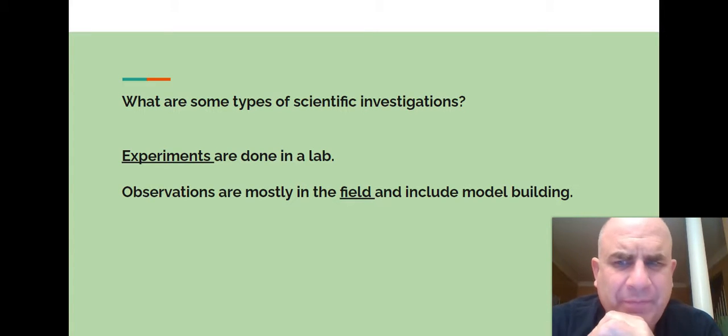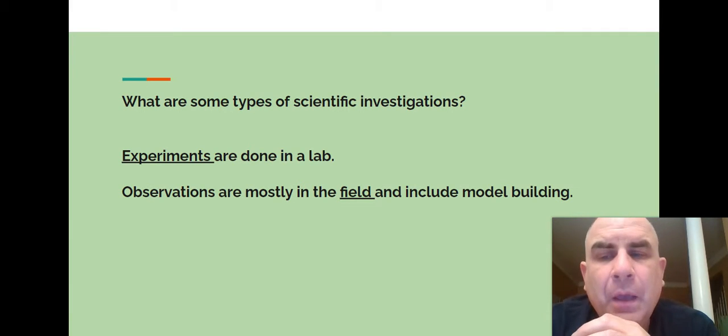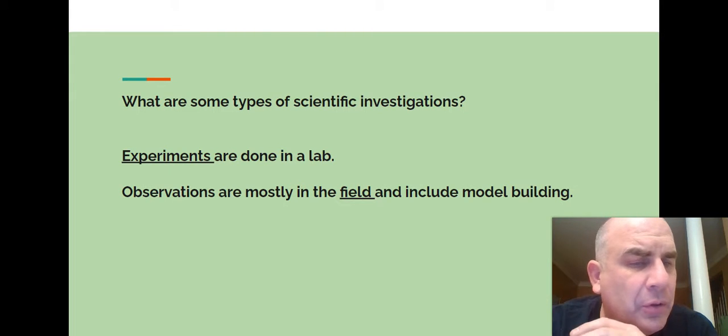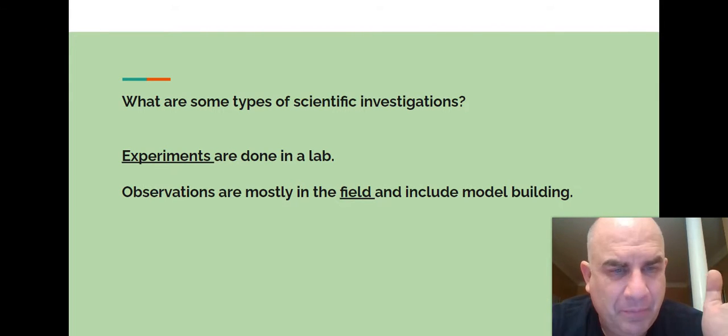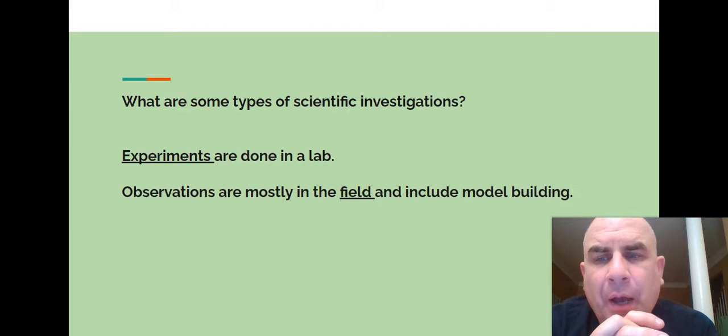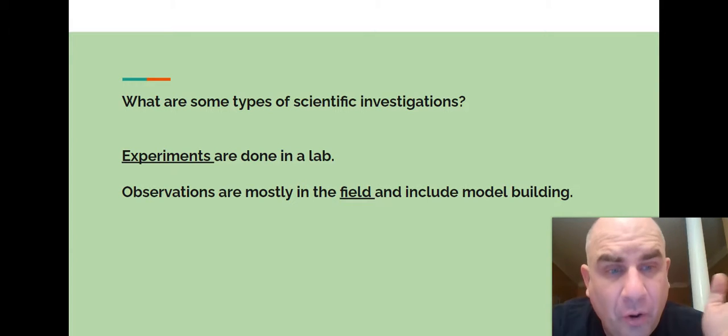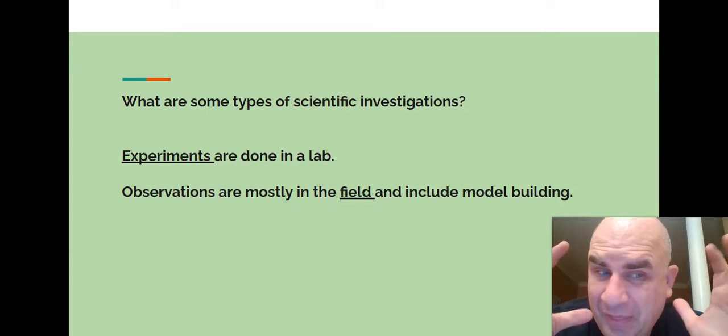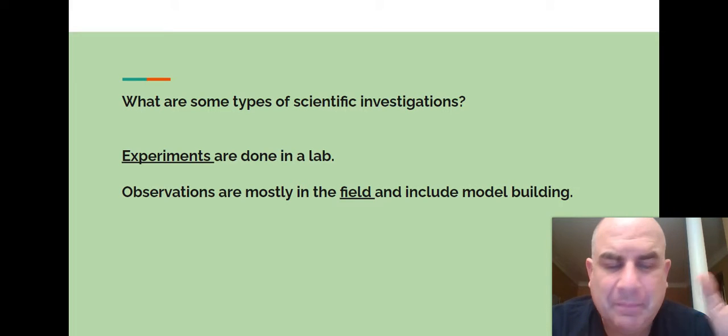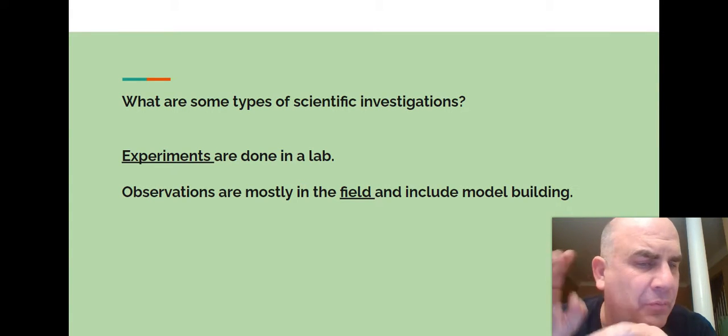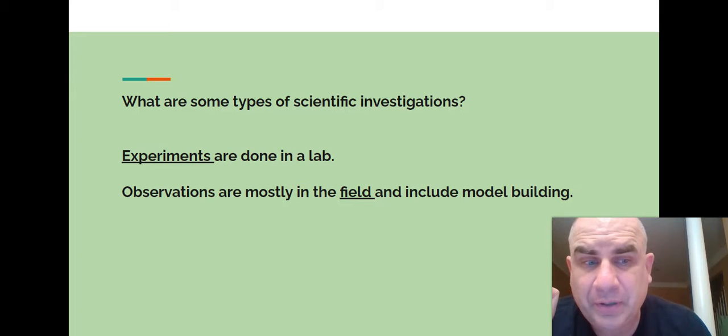What are some types of scientific investigations? Experiments are done in a lab. We measure things with rulers, thermometers, stopwatches. Observations are mostly in the field and include model building. We build a scale model of how something's going to work. Observations in the field: cloudy, rainy, overcast. You can't put a number on that so much. I could measure the temperature over a hot plate. That's an experiment. But observations are done mostly in the field and include model building, and they are important parts of science.